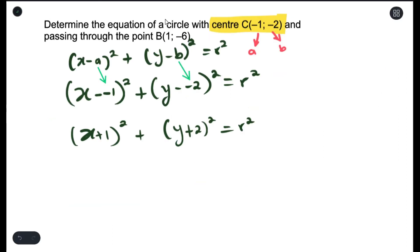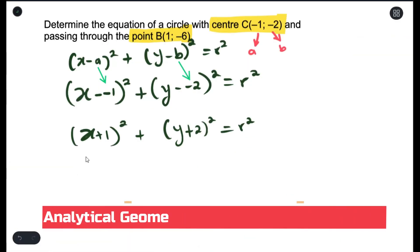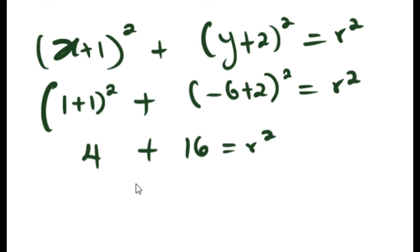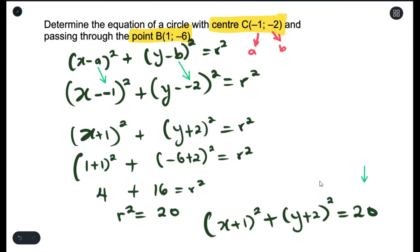If you go back to the question, it tells us that our equation of the circle passes through point B, which is 1 and -6. So we can substitute 1 and -6 into the equation. Our r² is 20, so we just substitute. And this here would be the equation that it wanted us to get.